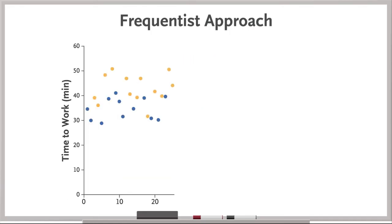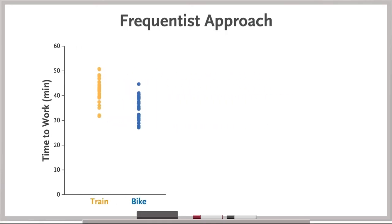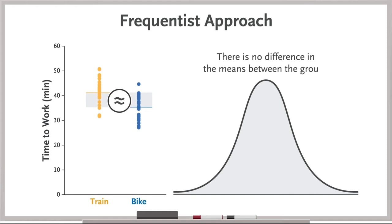You can, however, use your data to make some inferences. You can ask, how likely is it that someone would get these data if there were no difference in the means between the groups?